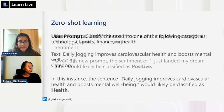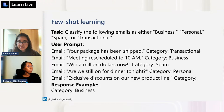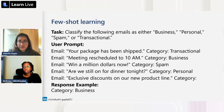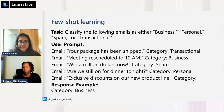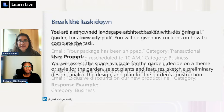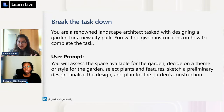In few-shot learning, we give the model a few examples of the kind of responses we expect. For instance, we give it several email text examples and tell it that each falls under a category — transactional, business, spam, or personal — then ask it to categorize a new email. We give it very few examples to provide context and guide the response.